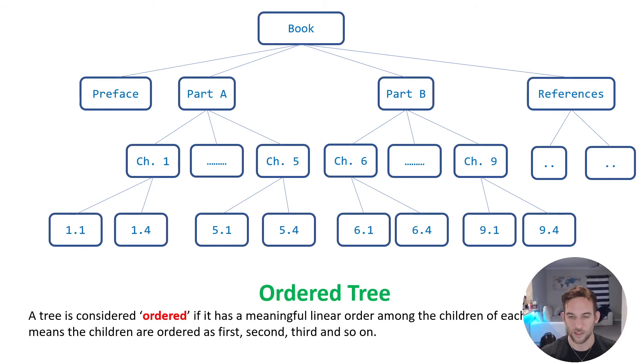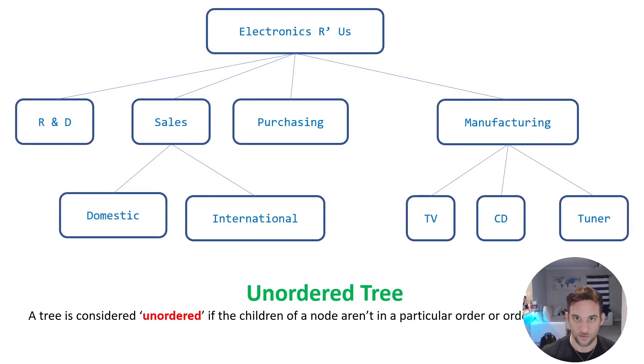You just need to understand this because later we'll come back to the definitions when we talk about other trees. So conversely, an unordered tree is one where the children of a node aren't in any particular order, or like the order doesn't matter. So if we take the tree that we've been looking at, Electronics R Us is the root node and has four children, and these can be, you could rearrange these in any way and it's not going to affect the outlook of the tree. It's not going to make a difference because manufacturing, purchasing, sales, and R and D are all under Electronics R Us. That's all that matters is that they're on the same level and the children of Electronics R Us. That is all that matters.